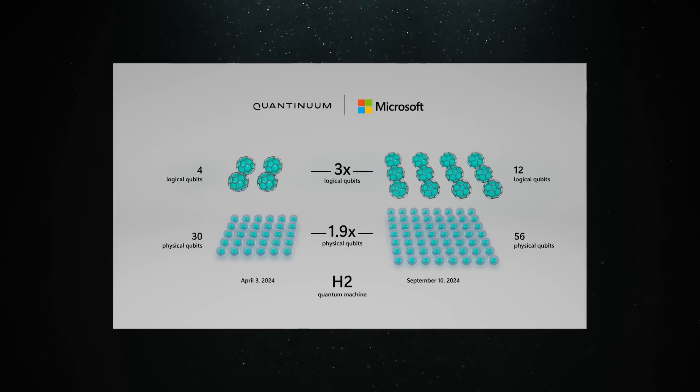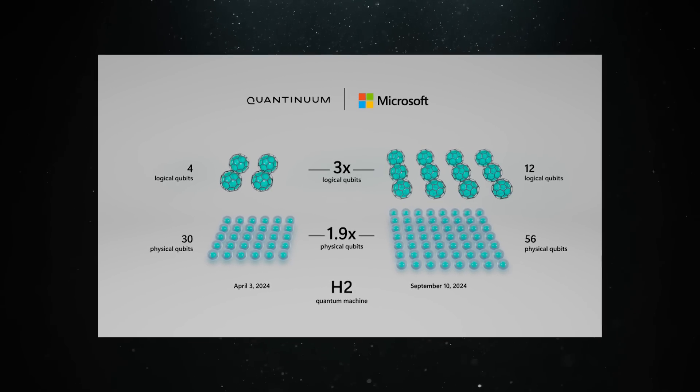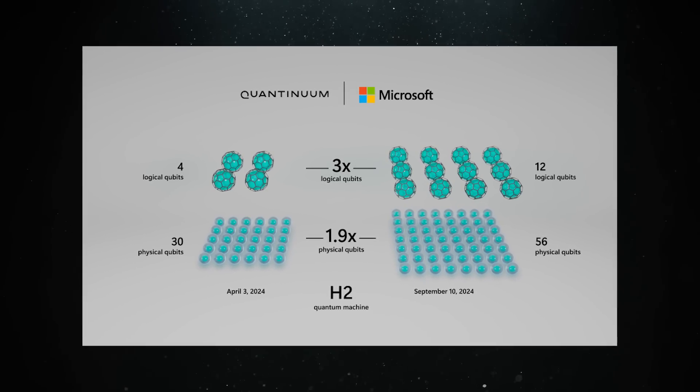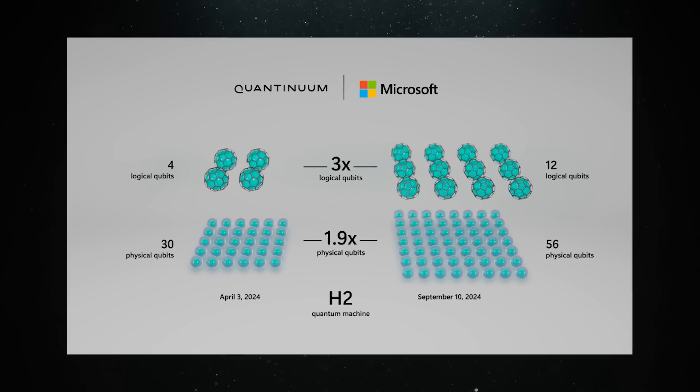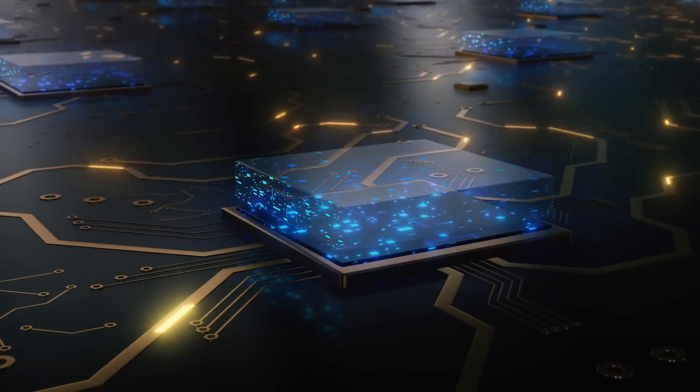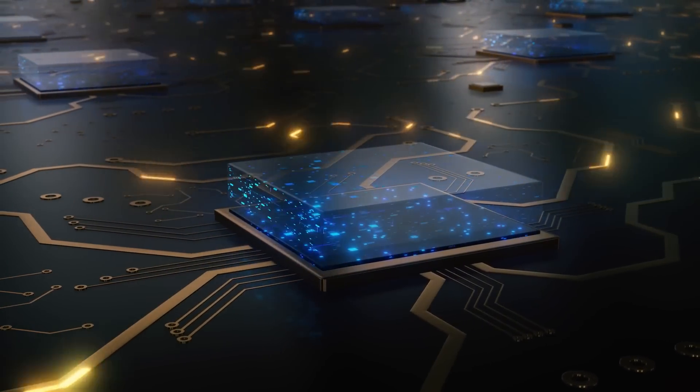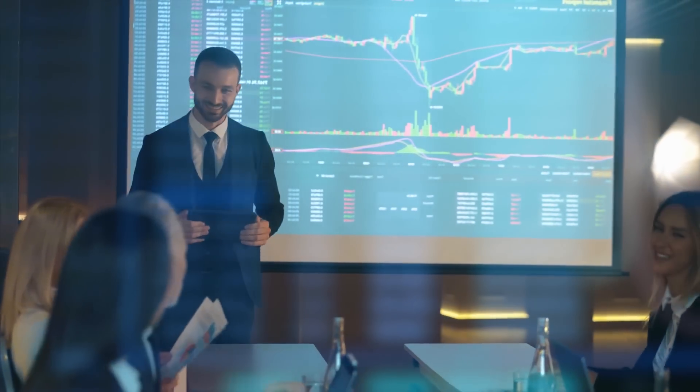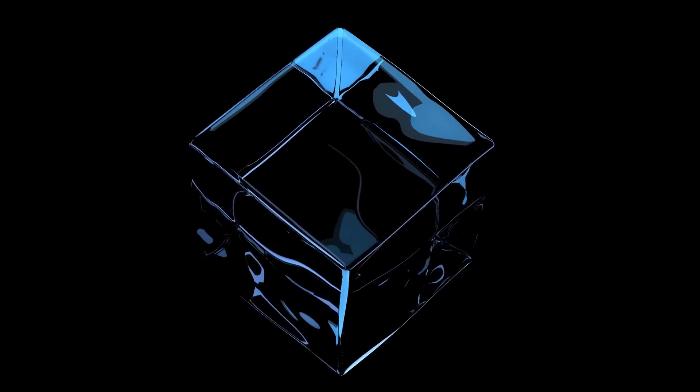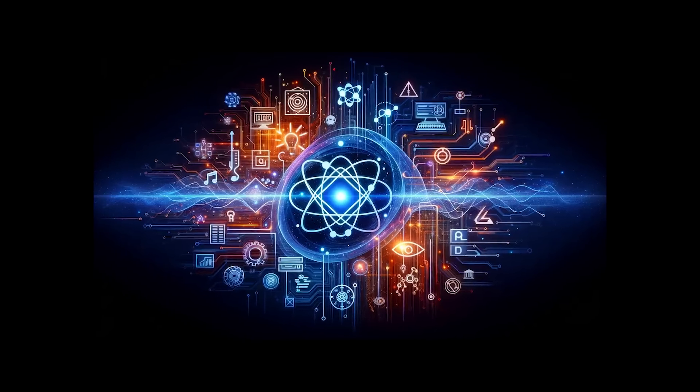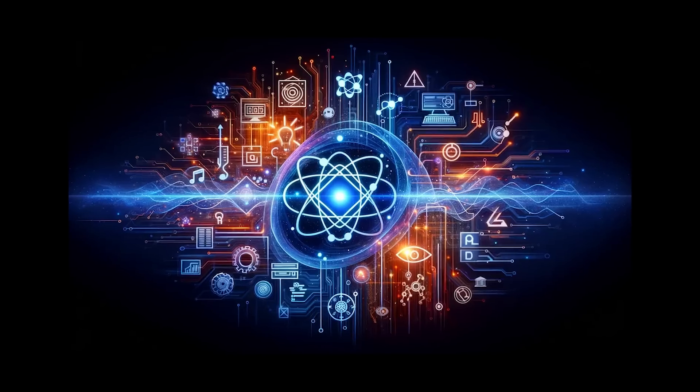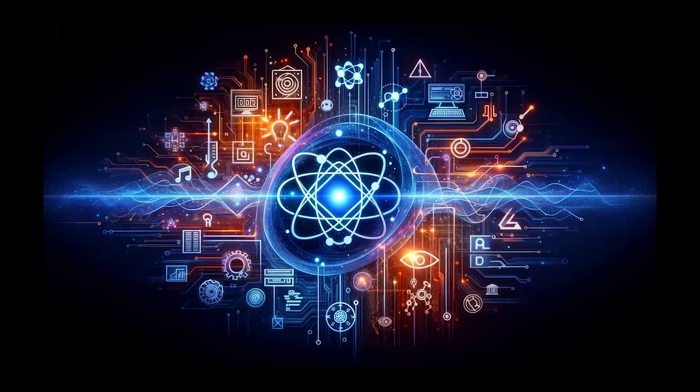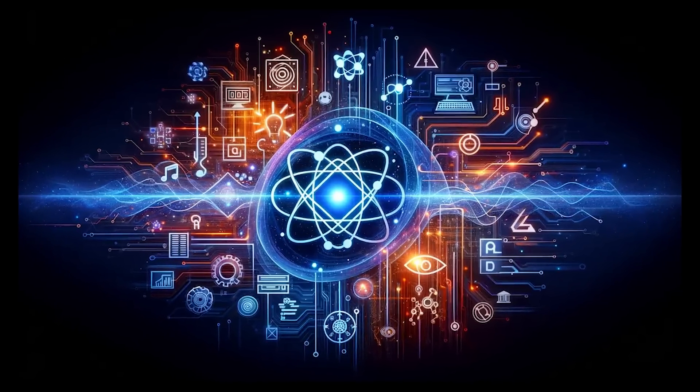How it all began. At first, Microsoft and Quantinuum were able to create four logical qubits by using 30 physical qubits. Physical qubits are basically the building blocks of a quantum computer, but they're prone to errors. To overcome this problem, companies use multiple physical qubits to create one logical qubit, which is more stable and reliable. The exciting part of their initial success was that the logical qubits they made were 800 times better in terms of error rate compared to the physical qubits.